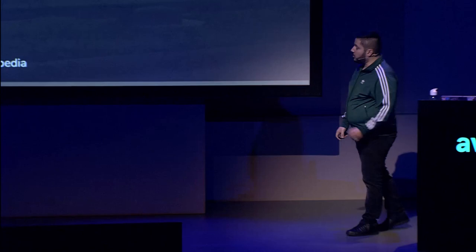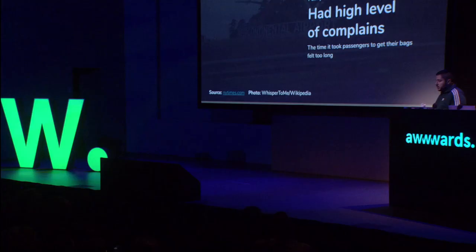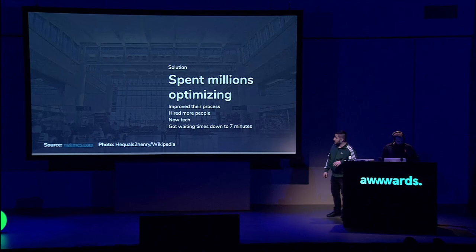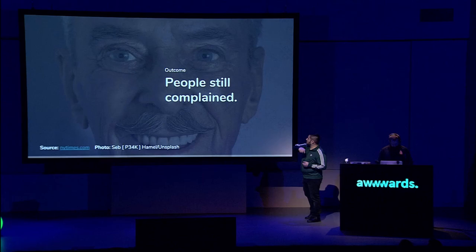Houston Airport had a really big problem. Passengers would complain about the time it would take for suitcases to arrive in the terminal building when the plane had landed. So Houston started investing millions into solving this big pain point. They improved the process, hired more people, got new tech, and got the time down to seven minutes — which is really impressive. Plane lands, seven minutes later, suitcases arrive. But people still complained.